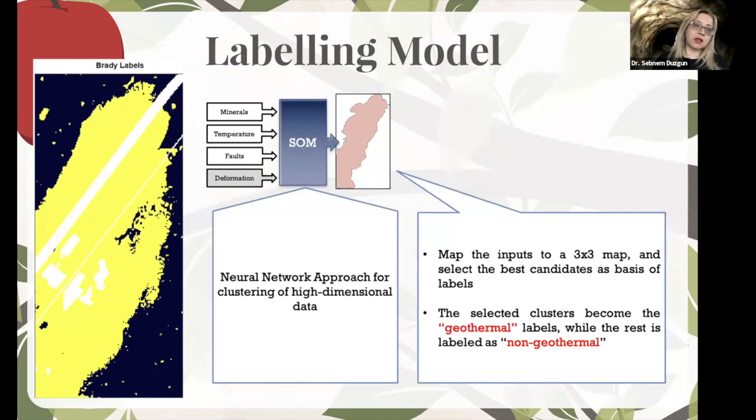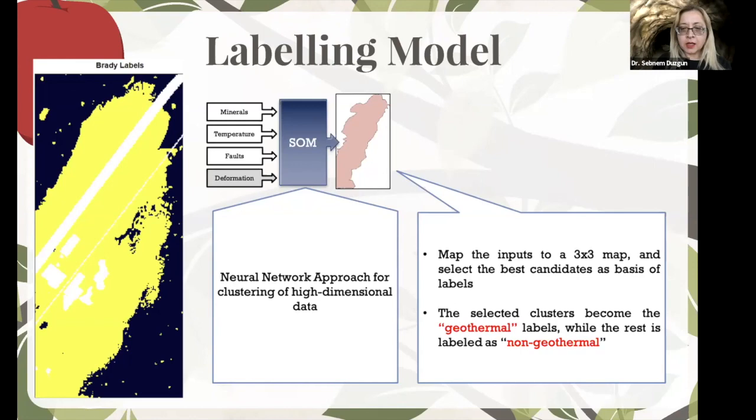So this is an example of the Brady site. So yellow areas are showing the geothermal sites. The white areas are human-made structures. And the black areas are non-geothermal. So this is just one section of it. Actually, area is much more bigger than that. So once we label this, we need to establish this deep learning model or AI model.